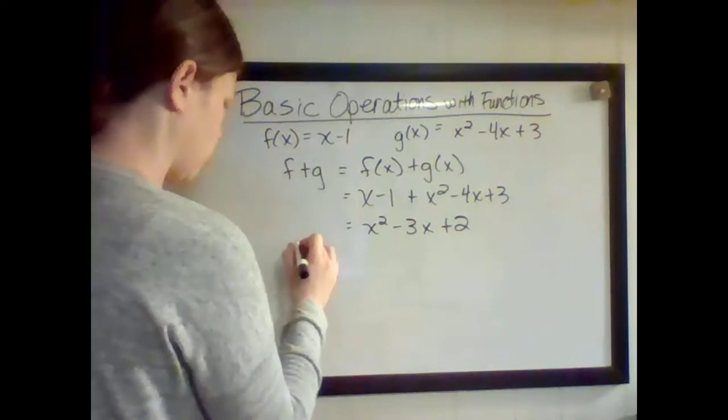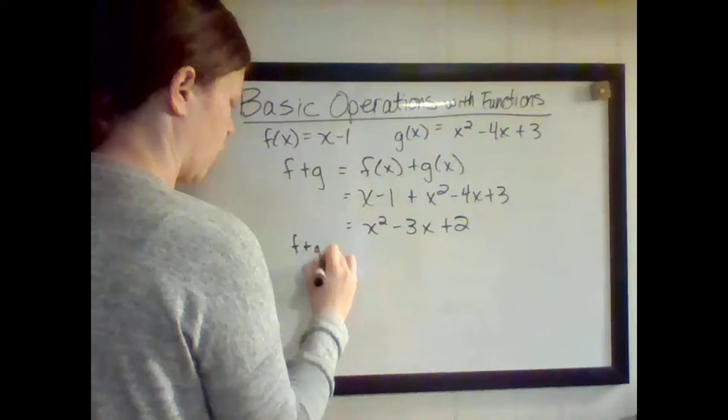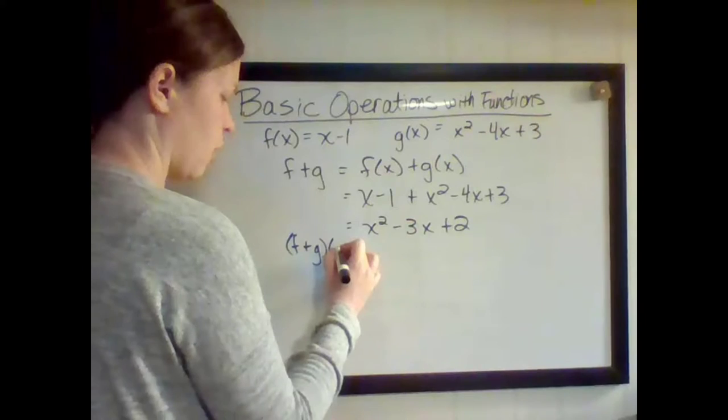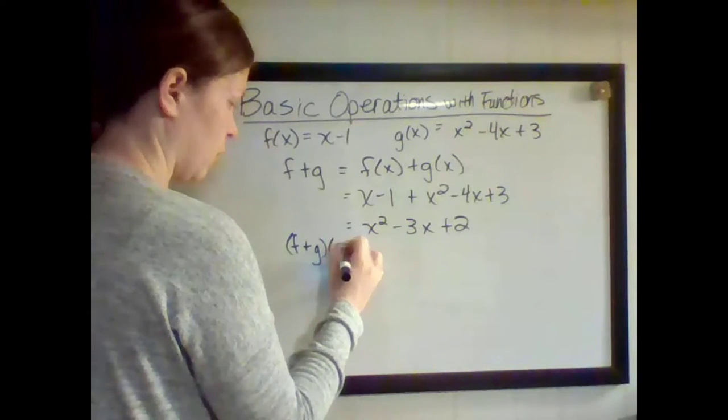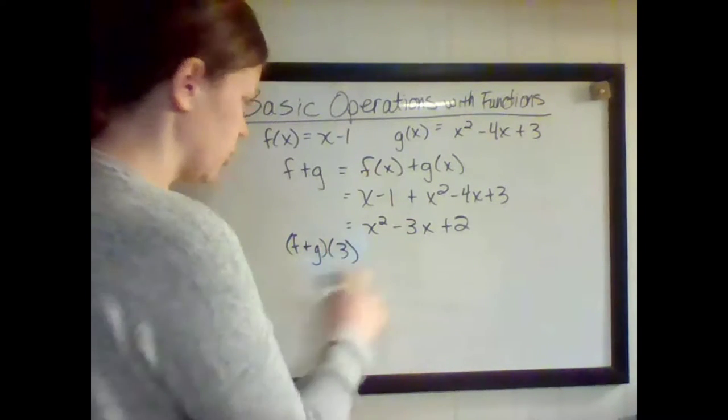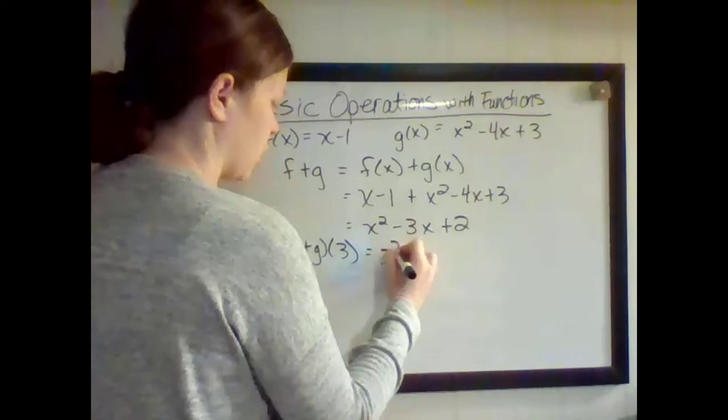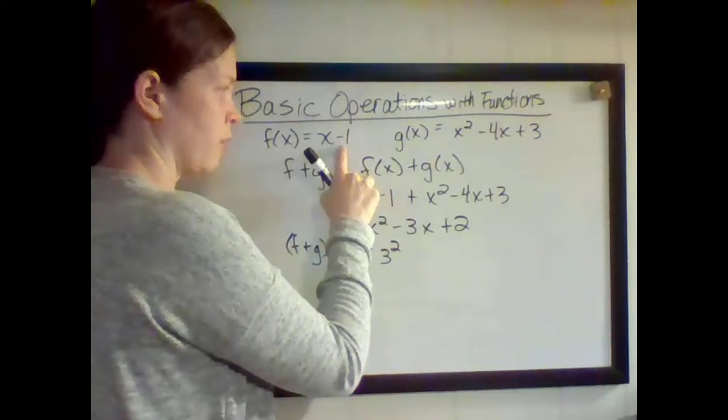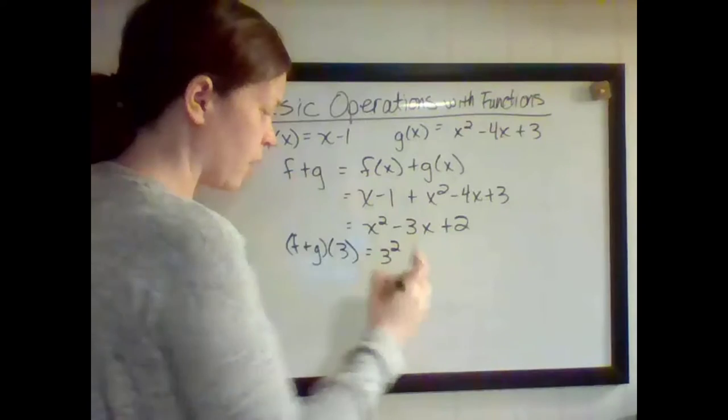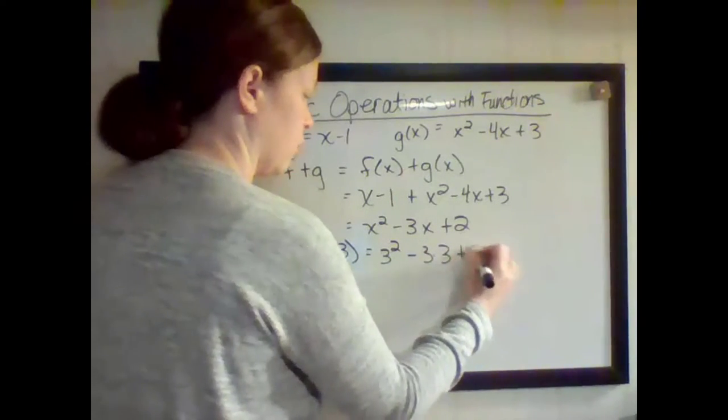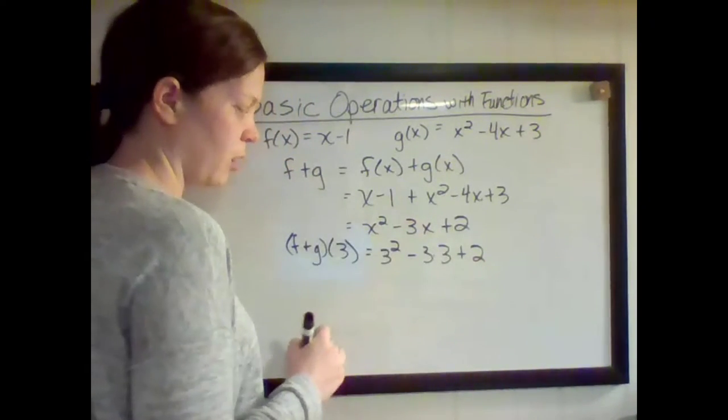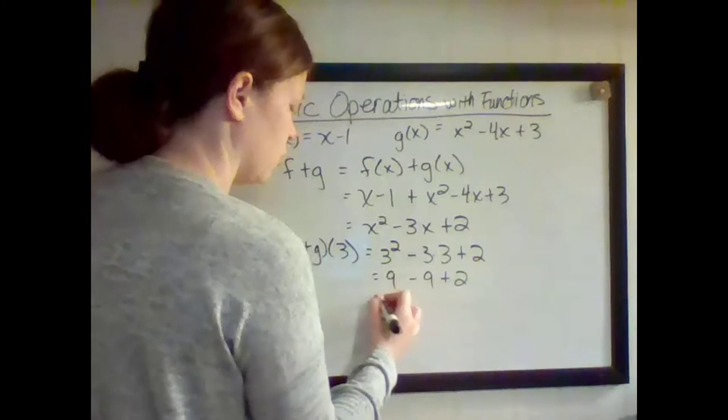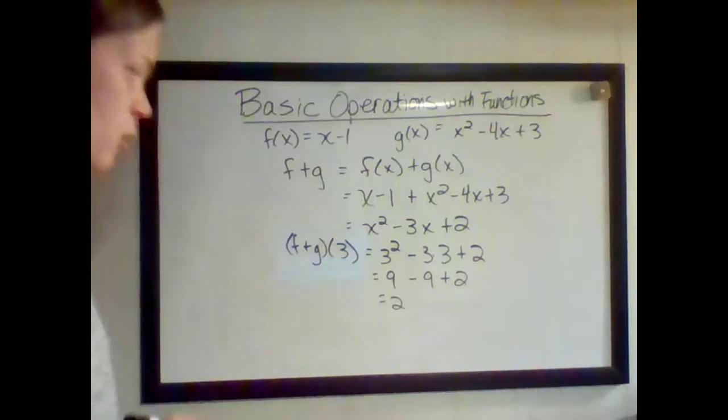Now let's say we want to evaluate this for a certain number. I'm going to do (f+g)(3). So I'm going to just plug in 3. I could plug 3 into f(x) and g(x) separately and then add them, but I'm going to use the combined function to make it easier. So 3² is 9, minus 3 times 3 is 9, plus 2. Simplifying it down, I get 2.